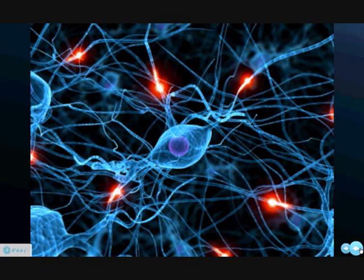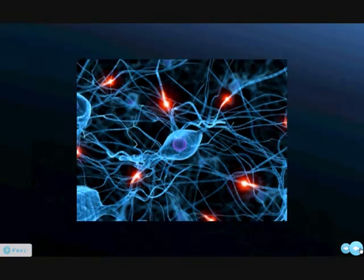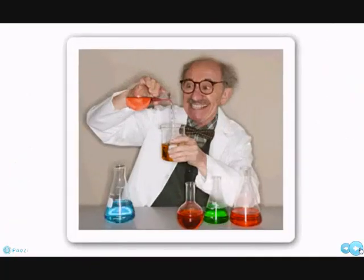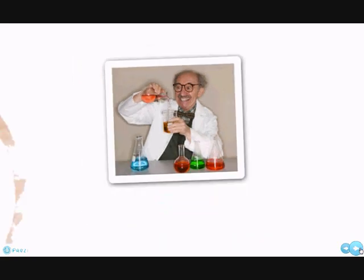These neurons send electrical impulses to each other, which allows us to think and do the things that we are able to do right now. To make our technology smarter and do more complex tasks like our brains, scientists decided to create an artificial neural network, which is modeled after the biological neural network inside of our brain.